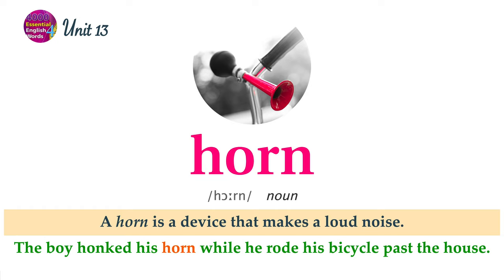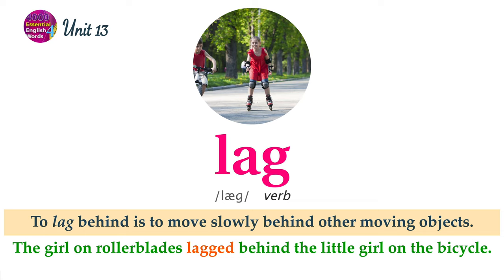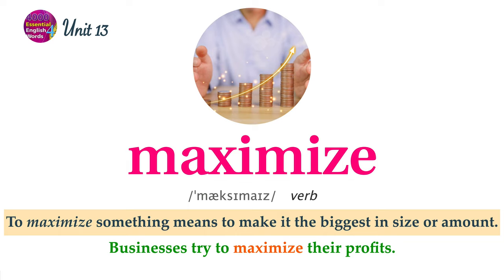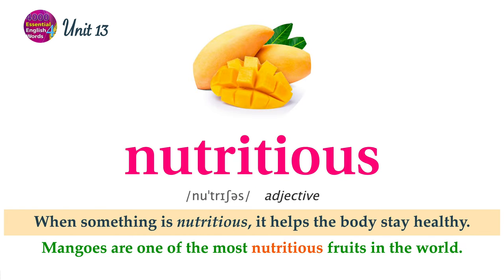A horn is a device that makes a loud noise. The boy honked his horn while he rode his bicycle past the house. When someone is irritable, they become annoyed or angry very easily. She is irritable when she doesn't get enough sleep. To lag behind is to move slowly behind other moving objects. The girl on rollerblades lagged behind the little girl on the bicycle. To maximize something means to make it biggest in size or amount. Businesses try to maximize their profits. A nightmare is a bad or scary dream. The girl was scared to go back to sleep because she had a nightmare.